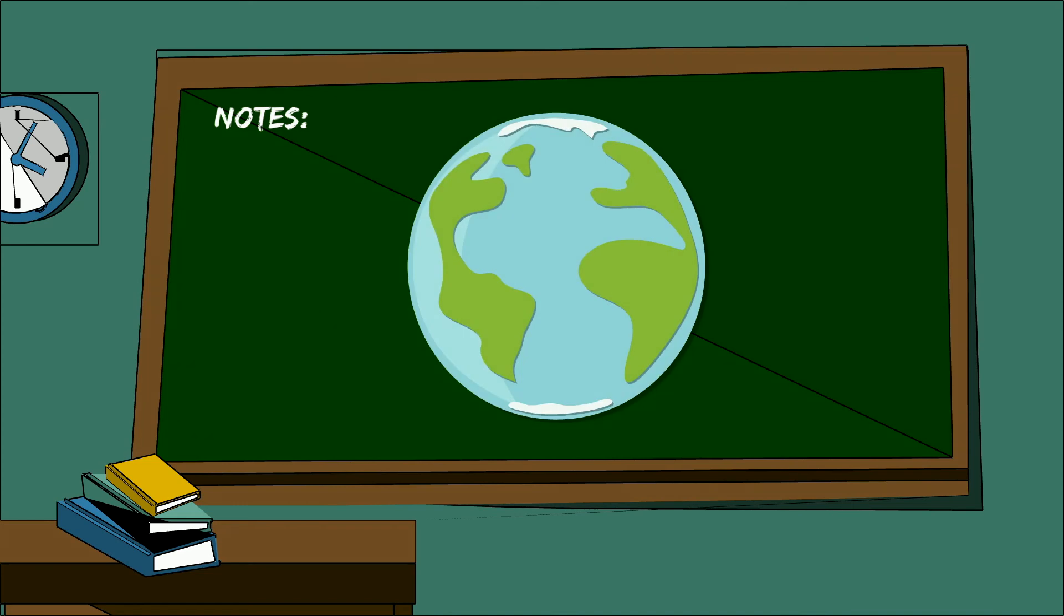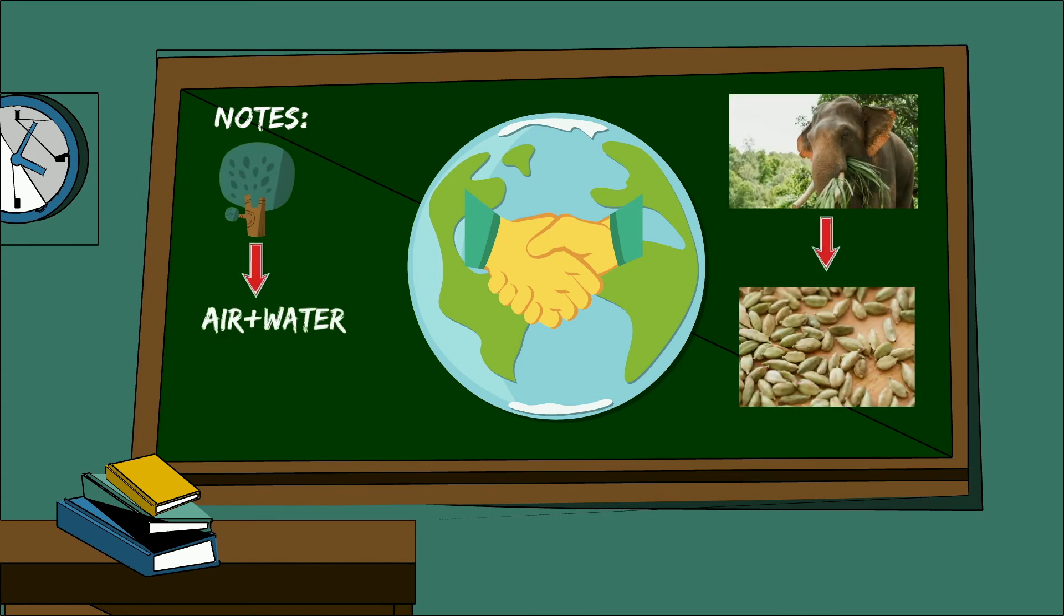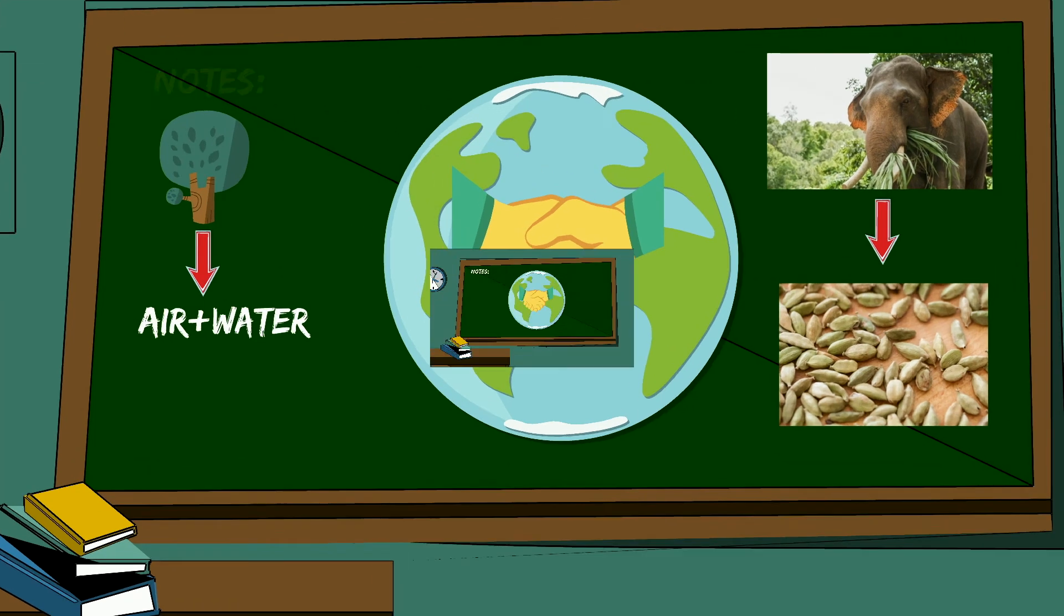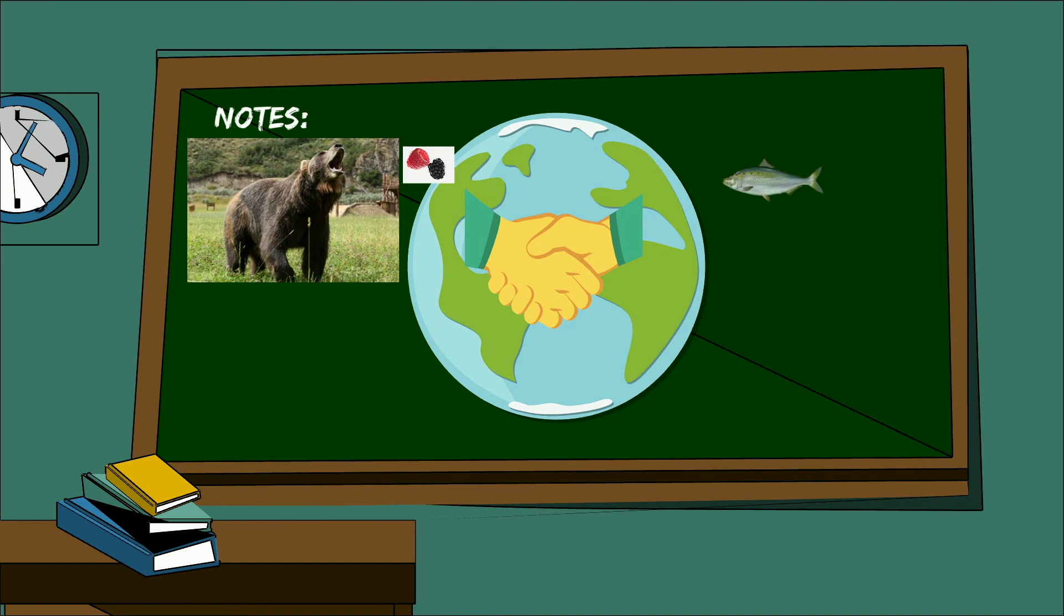Our planet is like a giant terrarium where millions of plants and animals support each other so all of them can live. Plants provide us with air and water, while animals help plants by spreading seeds. Animals eat other plants and other animals to survive, and, of course, we, as humans, eat animals and plants, too.